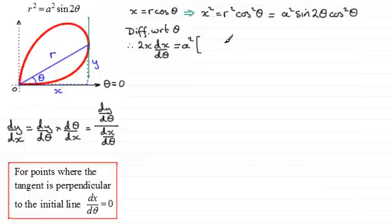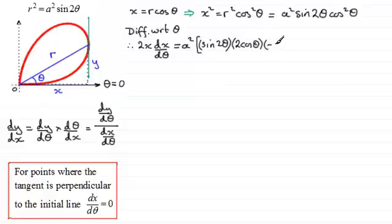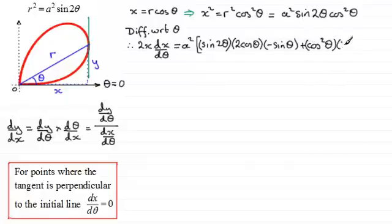On the right-hand side, a squared is a constant so I pull it out front of a bracket, then differentiate sine 2 theta cos squared theta by the product rule. Taking sine 2 theta multiplied by the differential of cos squared theta — which by the chain rule is 2 cos θ times minus sin θ — then adding cos squared theta multiplied by the differential of sine 2 theta, which is 2 cos 2 theta.